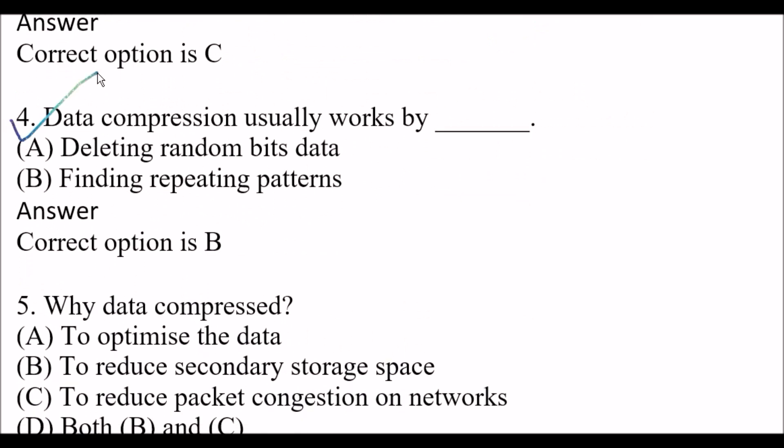Next question: Data compression usually works by — Option A: deleting random bit data. Option B: finding repeating patterns. The right answer is option B, finding repeating patterns. Data compression usually works by finding repeating patterns.